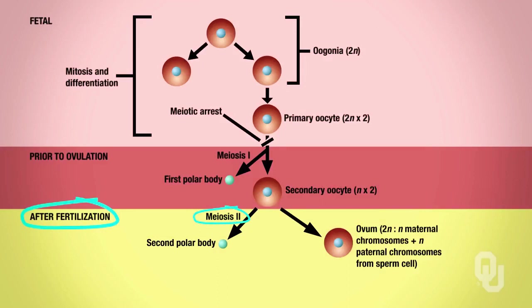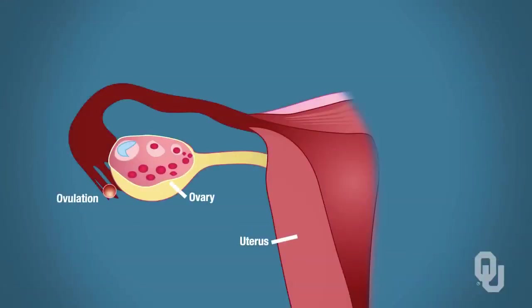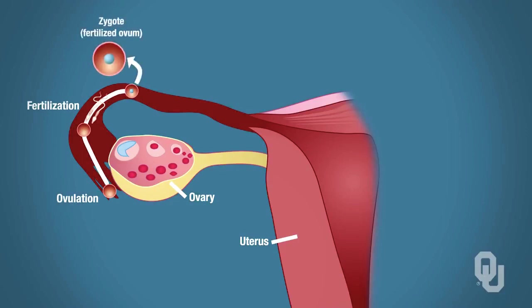The sperm plasma membrane then disintegrates, the chromosomes from the sperm and from the ovum migrate to the center, and now we have a zygote. So from that fertilized egg, the zygote is going to start developing. Remember, we're in the uterine tube—here's the zygote, which is the fertilized ovum.